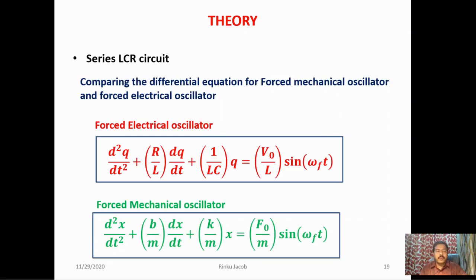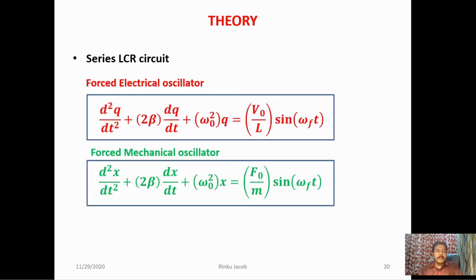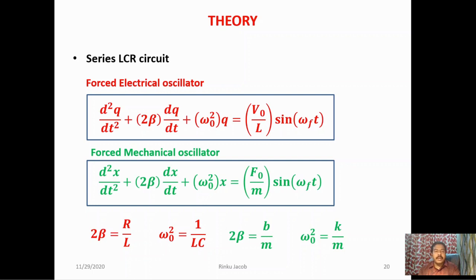Comparing the differential equations for the forced electrical and mechanical oscillators, both are analogous to each other. For the electrical oscillator: 2β = R/L and ω₀² = 1/LC. For the mechanical oscillator: 2β = B/M and ω₀² = K/M. Therefore, damping in the electrical oscillator is produced by the resistor, and the restoring ability is provided by the inductor and capacitor.